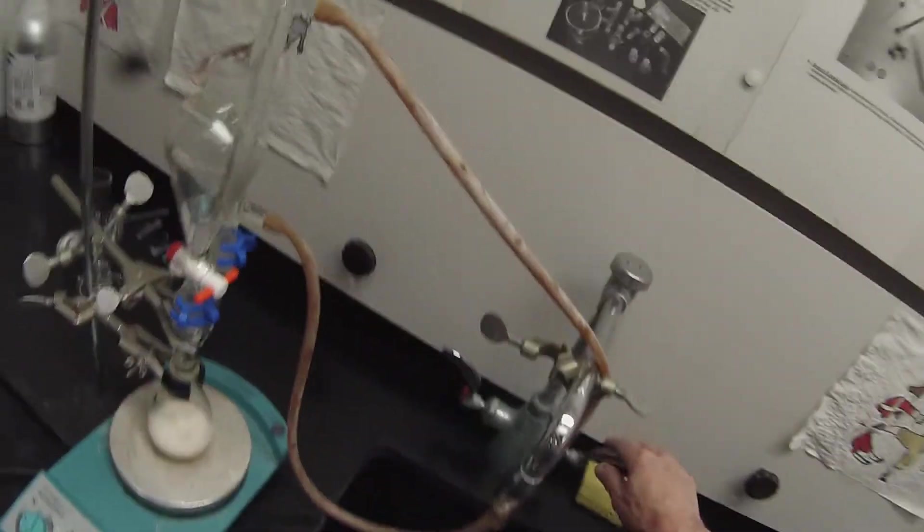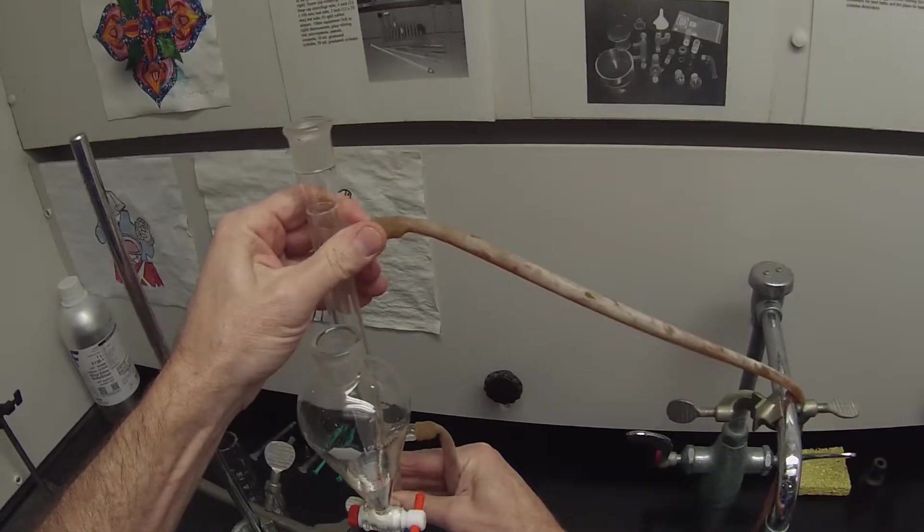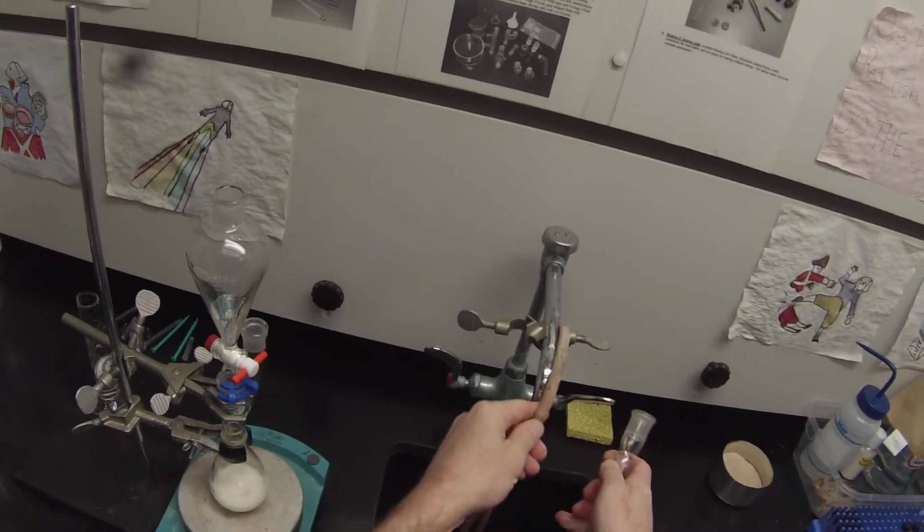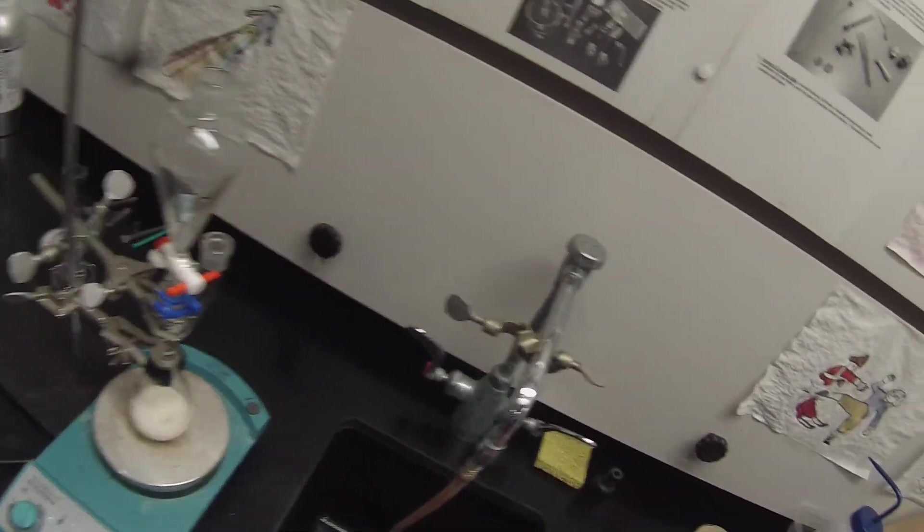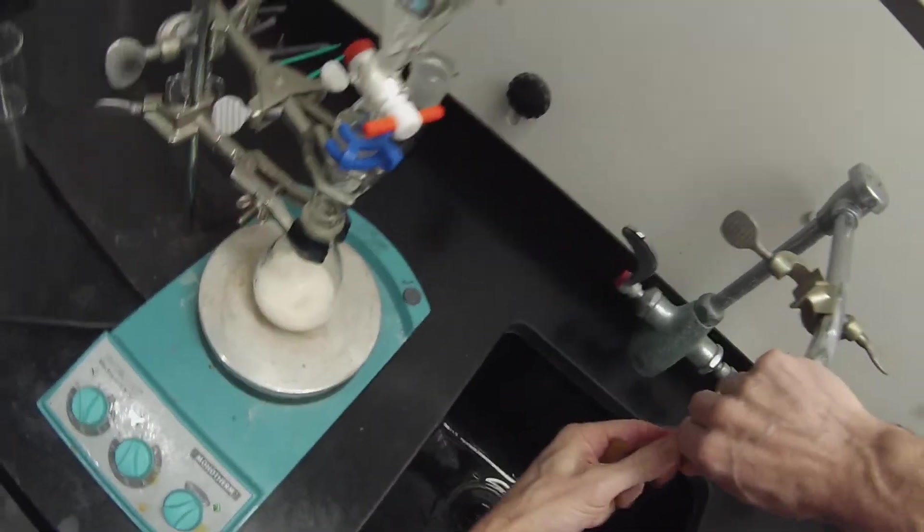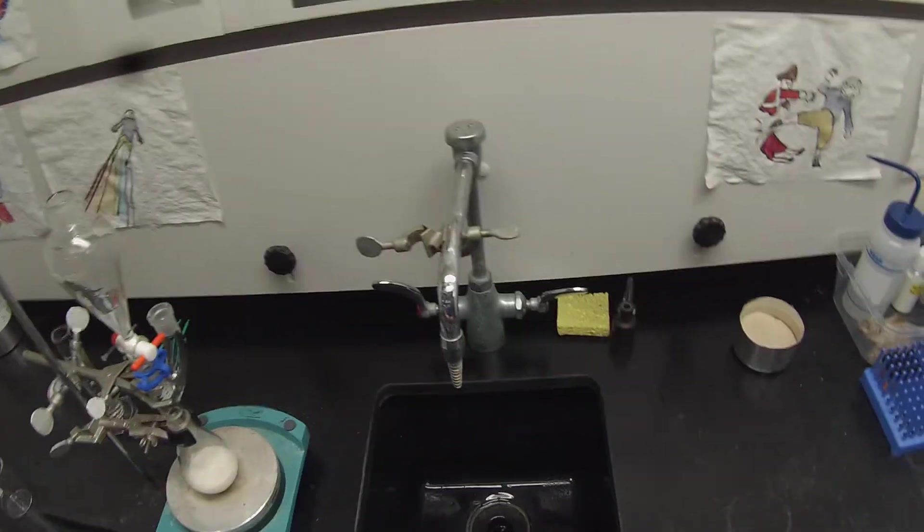It's no longer necessary to have the condenser, so I can turn off the condenser water and remove that while I'm waiting for it to cool. Since this had nothing but ether on it, it's also not necessary to clean it. It's usually easiest to get them off if you roll them back on themselves. Another Keck clip. Those in the back of the hood, and this guy just gets put away.